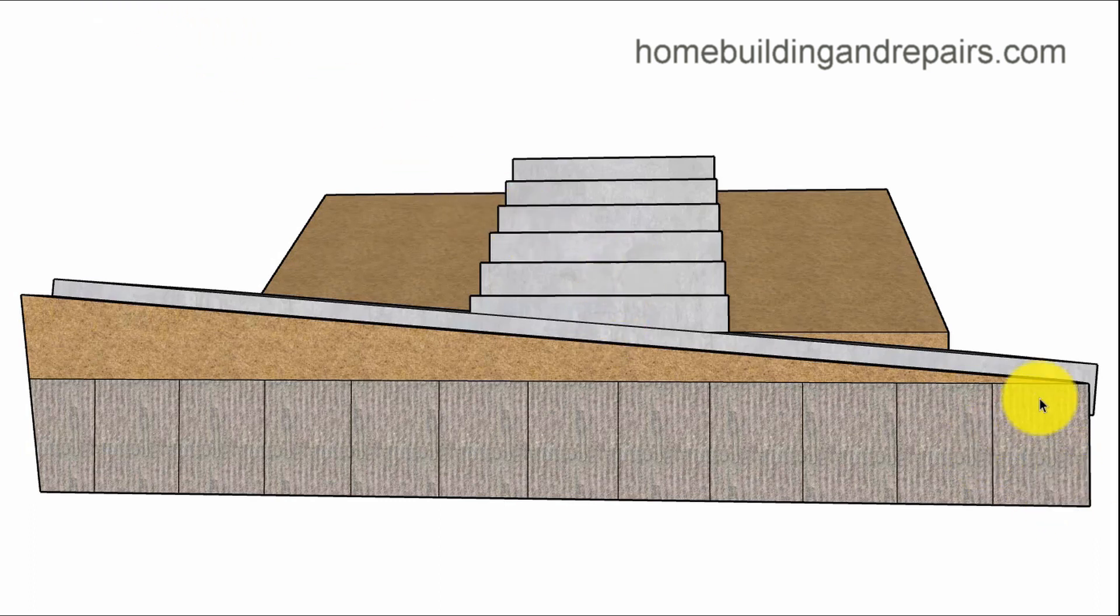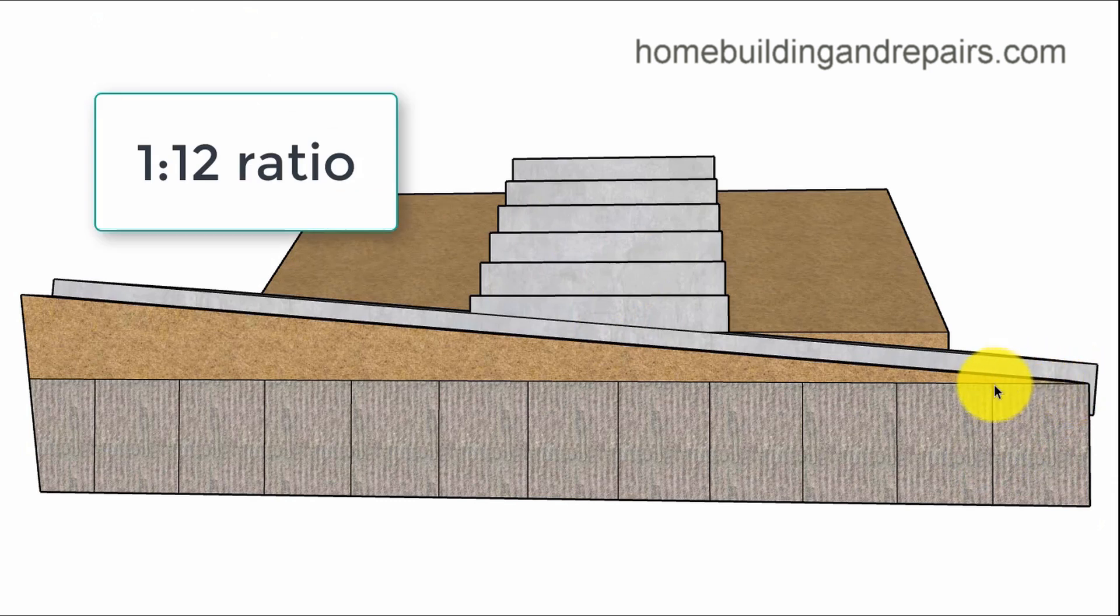Now, let's take a look at what a 1 in 12 unit of measurement is. For every 12 inches or 1 foot, you're allowed to go up 1 inch. If you go 2 feet, you're allowed to go up 2 inches. 3 feet, 3 inches. This represents a 1 in 12 ratio.